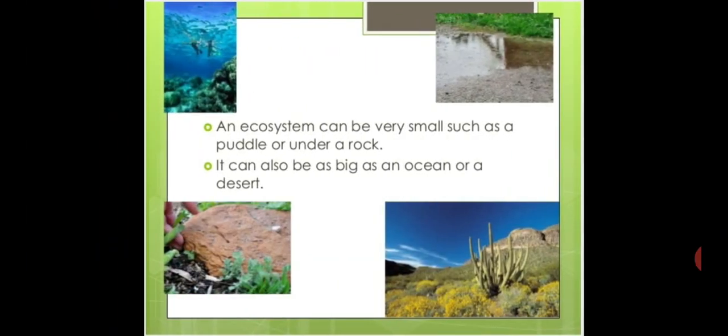Ecosystem can be very small, such as a puddle or under a rock. It can also be as big as an ocean or a desert. Ecosystem can be a piece of rock as well, or any lake or pond around you. If you want to understand any particular part of the environment which we call an ecosystem, those factors affecting it can be living things or non-living things.